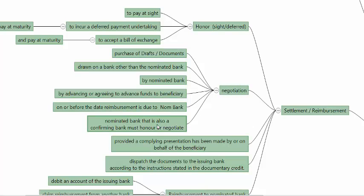The nominated bank that is also the confirming bank must honor or negotiate — they have no option. If the documents are compliant, they have to honor or negotiate.